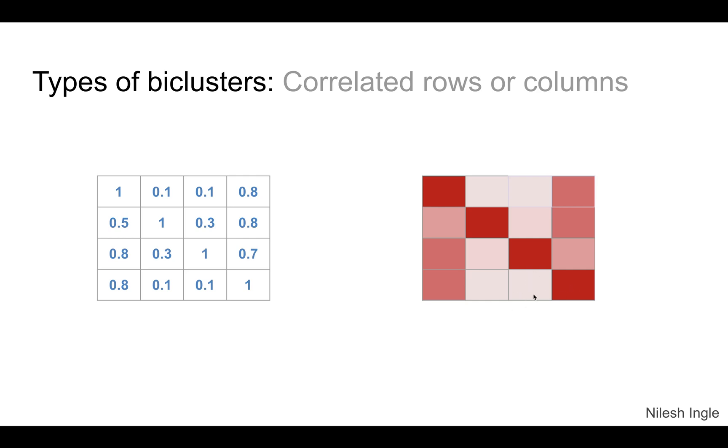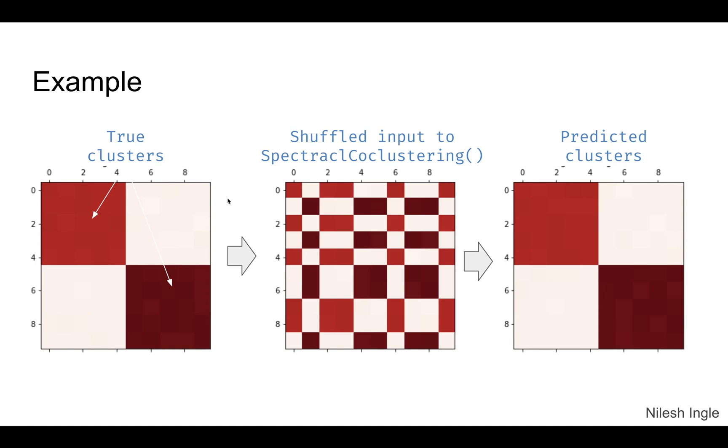Here is one example. Let's say this is the original true clusters. We can shuffle these and create this particular matrix shown in the middle, then input the shuffled matrix to the spectral co-clustering method in scikit-learn. That will output these predicted clusters plotted on the rightmost side. These match very well with the original clusters we would have expected from the spectral co-clustering output. If you add noise, there could be some deviation. I've put a code snippet where you can play with this particular matrix.